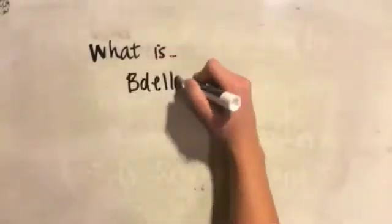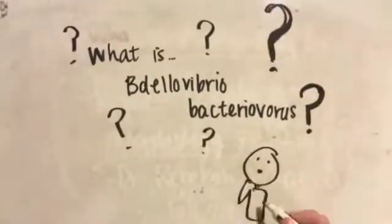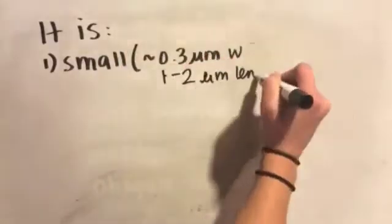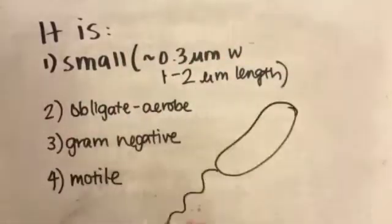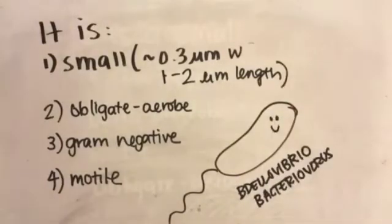So what exactly is Bdellovibrio bacteriovorus? It is a very small obligate aerobic gram-negative bacteria that is also motile, curved, and rod-shaped.